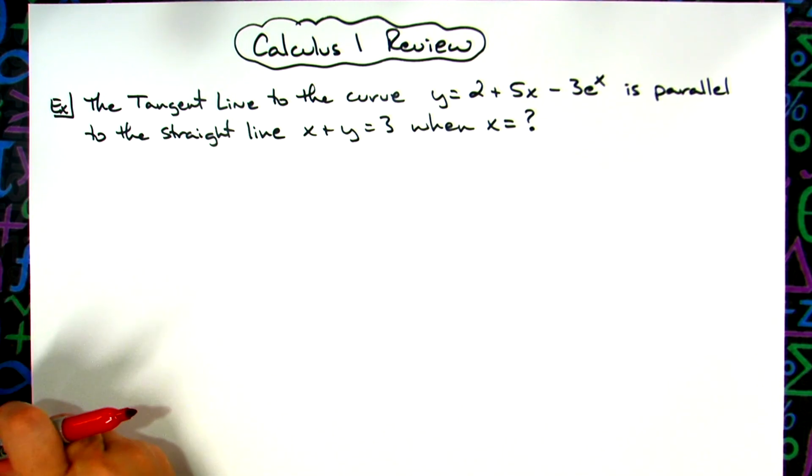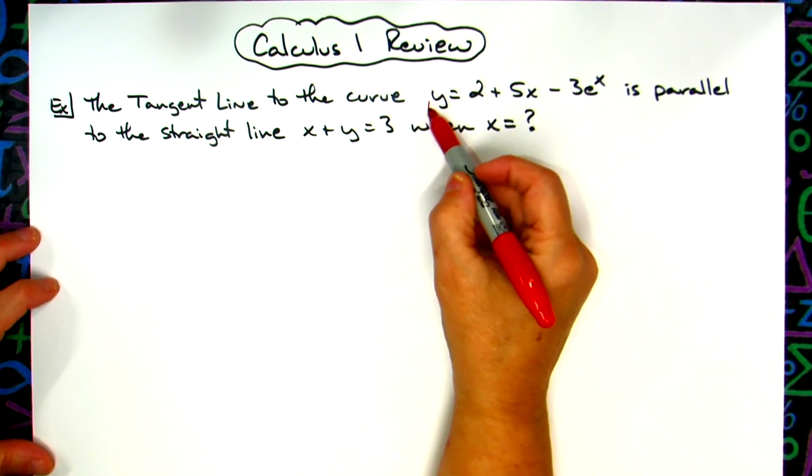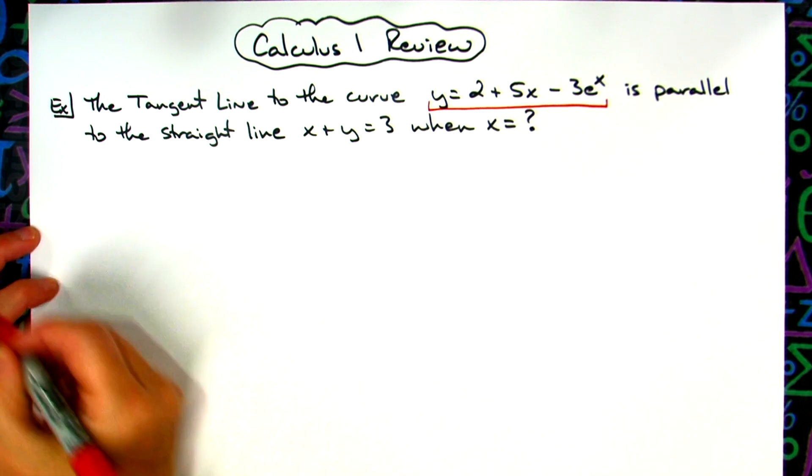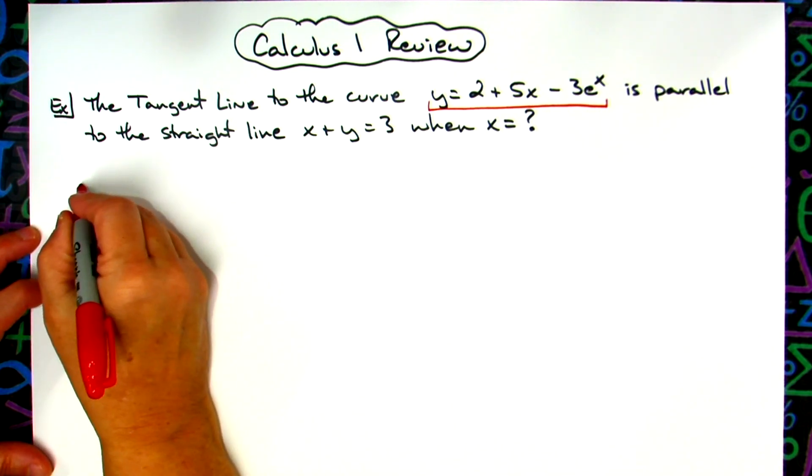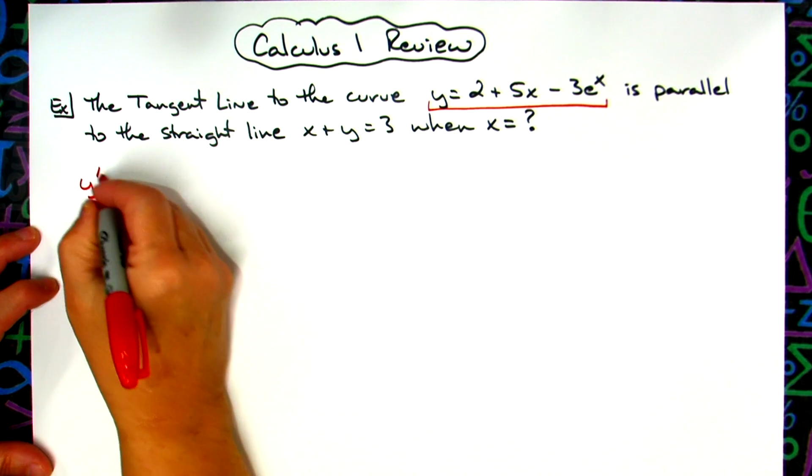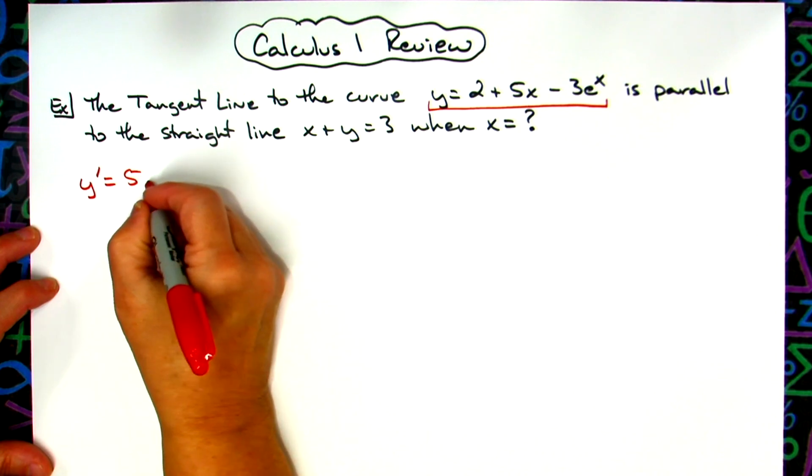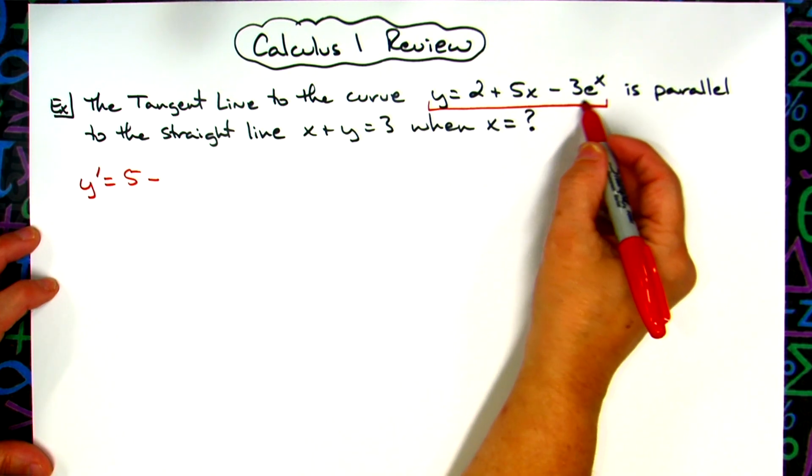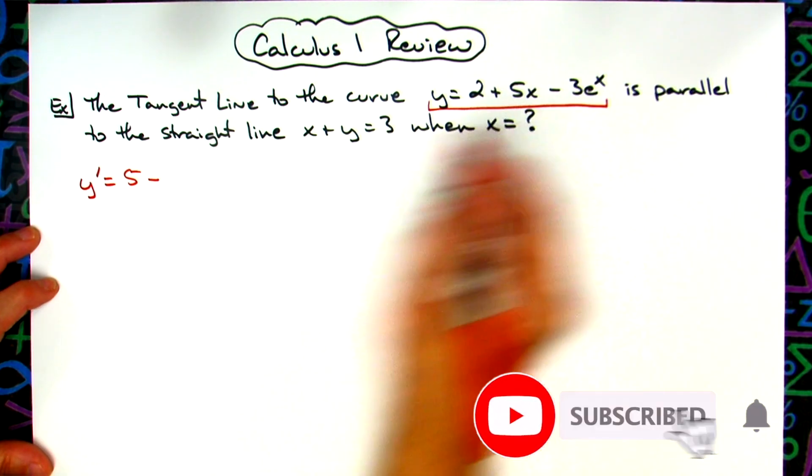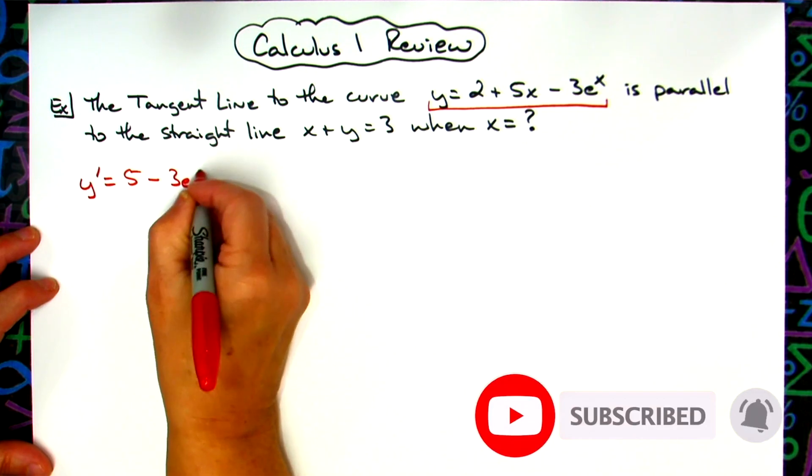All right, so basically here we're going to take the derivative of this first equation. So we've got y' equals, the 2 disappears, derivative of 5x is just 5, and then 3e^x will just be 3e^x. So we have y' = 5 - 3e^x. There's our derivative.